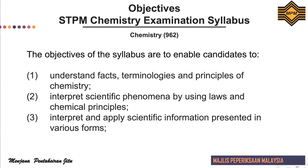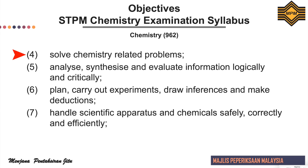The objectives of the syllabus are to enable candidates to: First, understand facts, terminologies and principles of chemistry. Second, interpret scientific phenomena by using laws and chemical principles. Third, interpret and apply scientific information presented in various forms. Fourth, solve chemistry and related problems. Fifth, analyze, synthesize and evaluate information logically and critically.